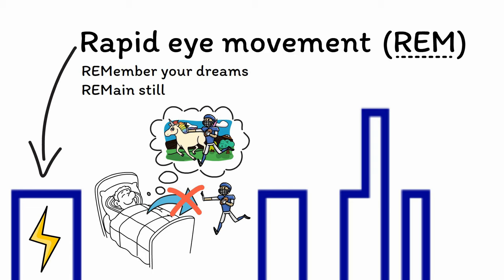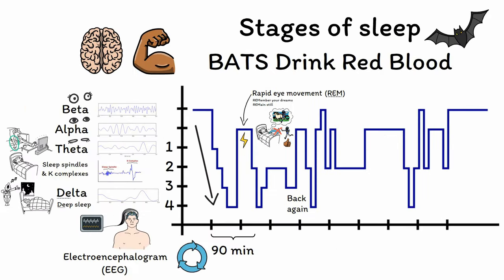This widespread muscle paralysis is a good thing, as without it we would likely act out our dreams at night and not get very much rest. Finally, B is for back again. Following REM sleep, the brain moves backwards through the previous stages of sleep and then begins another cycle. This cycle between REM and non-REM sleep repeats several times per night. After enough time, the person spontaneously wakes up.